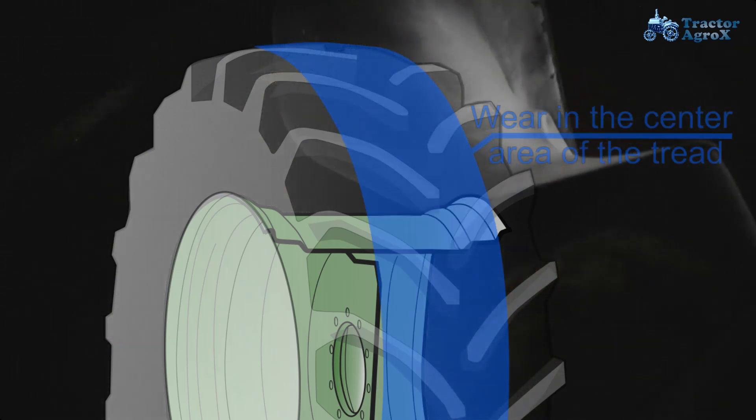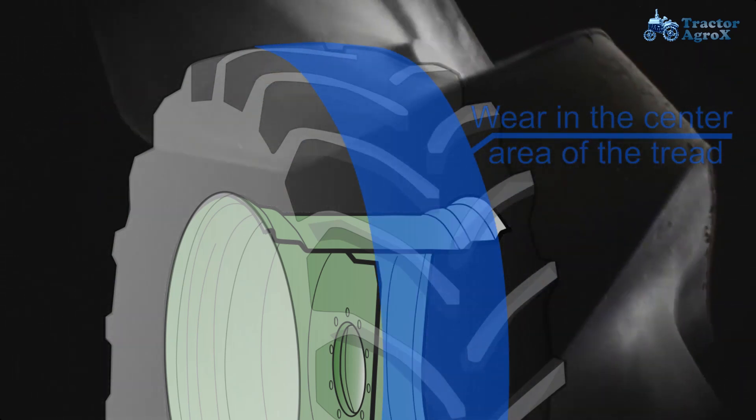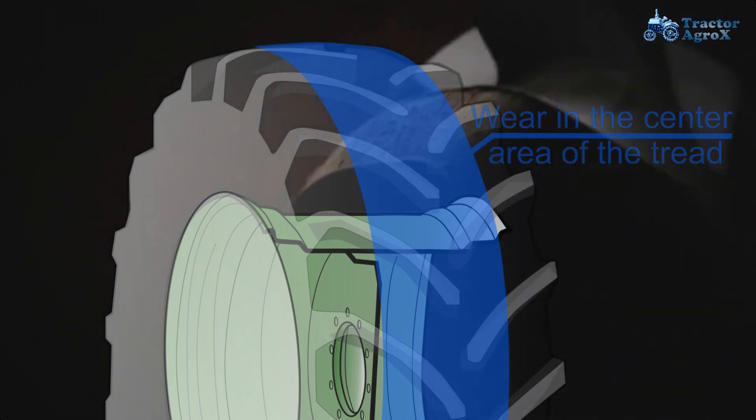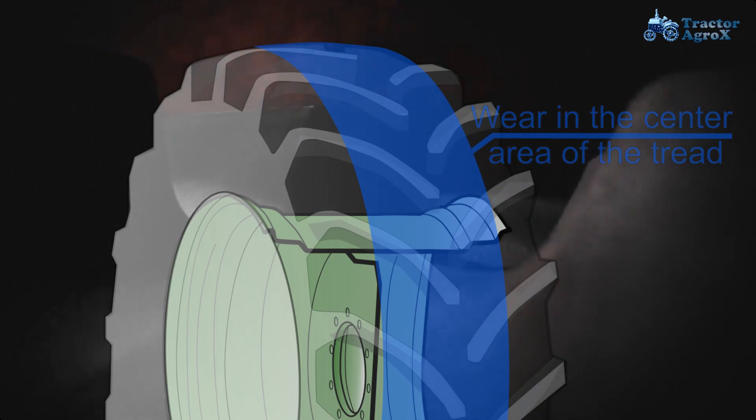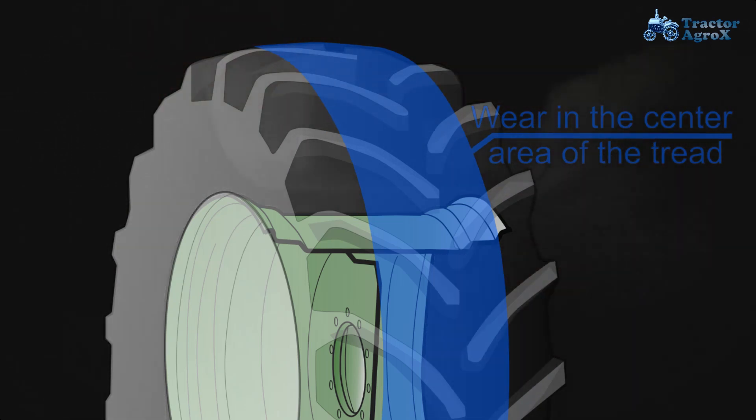On a narrow rim the tread of the tire is rounded, as with the over inflated tire. Tread wear will be concentrated in the center area of the tread and traction in the field will be reduced.